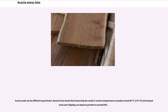Acacia seeds can be difficult to germinate. Research has found that immersing the seeds in various temperatures, usually around 80°C (176°F), and manual seed coat chipping can improve germination to around 80%.